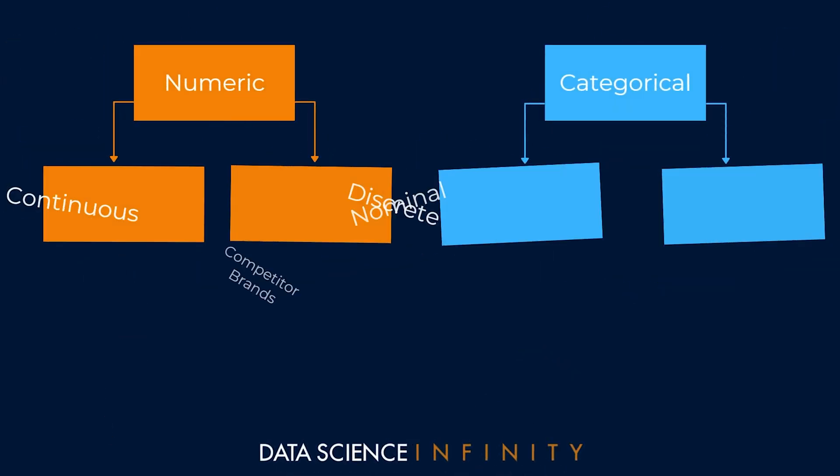In part one of this statistics made easy series, we looked at some different types of data. Here in part two, we will be taking things to the next level and looking at distributions.